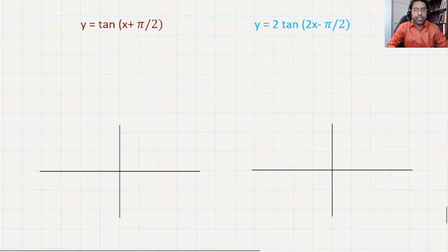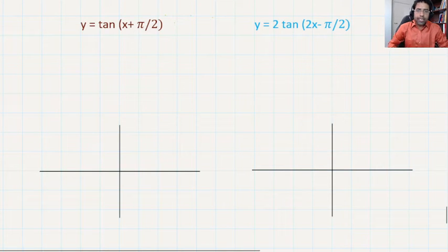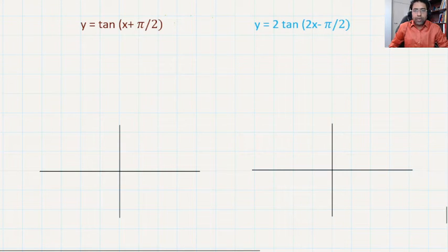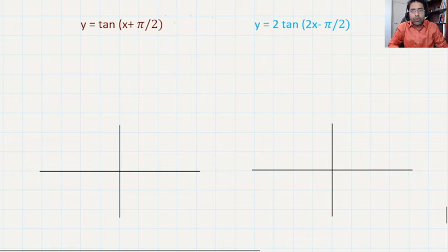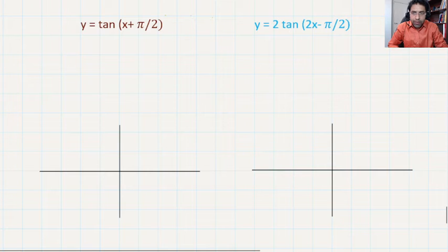As you know, talking about amplitude for the tangent graph makes no sense because the graph goes undefined when approaching the vertical asymptote. If you remember, when we explained the parent graph y = tan(x), we wrote it as sin over cos.